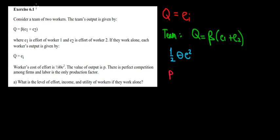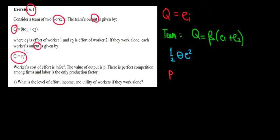Let's start working on question 1. We have two workers that work in a team and the team's output is given by a function. The effort levels and beta is the effect of working together — the team effect. If they work alone, the output of every worker depends on the effort that he puts.